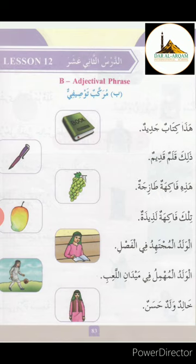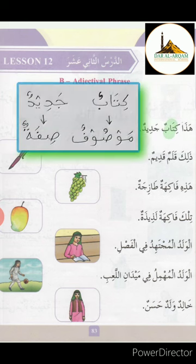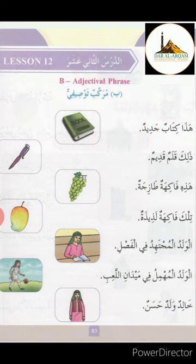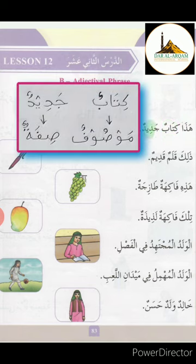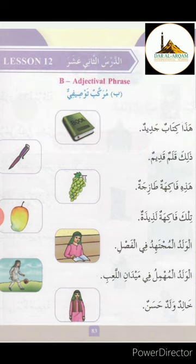In this sentence, the phrase is كِتَابٌ جَدِيدٌ. كِتَابٌ is mausuf (described word) and جَدِيدٌ is shifat (describing word). The describing word is called shifat and the described word is mausuf.